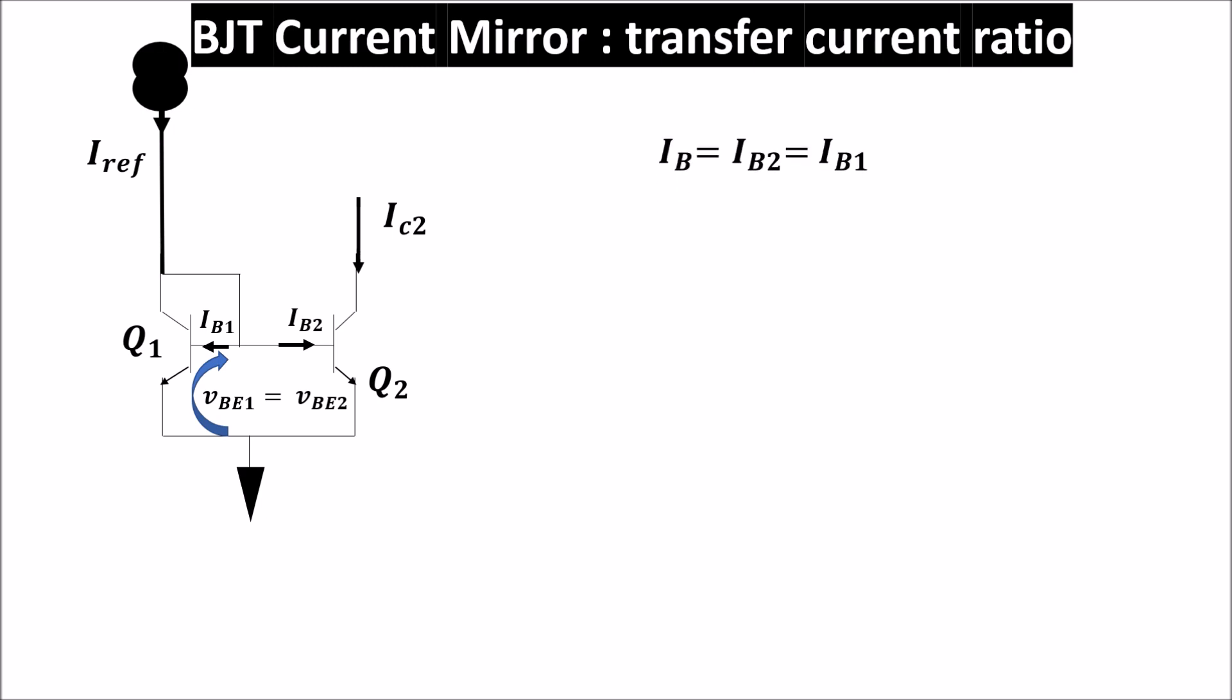The base currents have to come from Iref so in this feedback flow 2IB. So we can write that IC1 the current flowing in Q1 is equal to Iref minus 2IB, but because the BJTs have the same VBE, IC2 is equal to IC1 and remembering that IB is IC divided by beta we can write this, thus getting this final equation which gives us the transfer current ratio of this configuration.